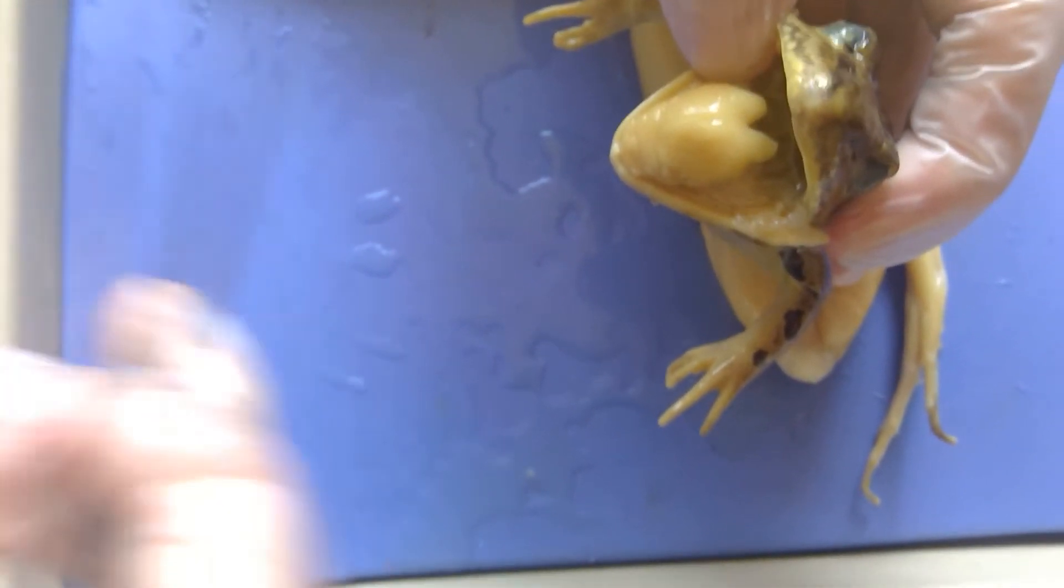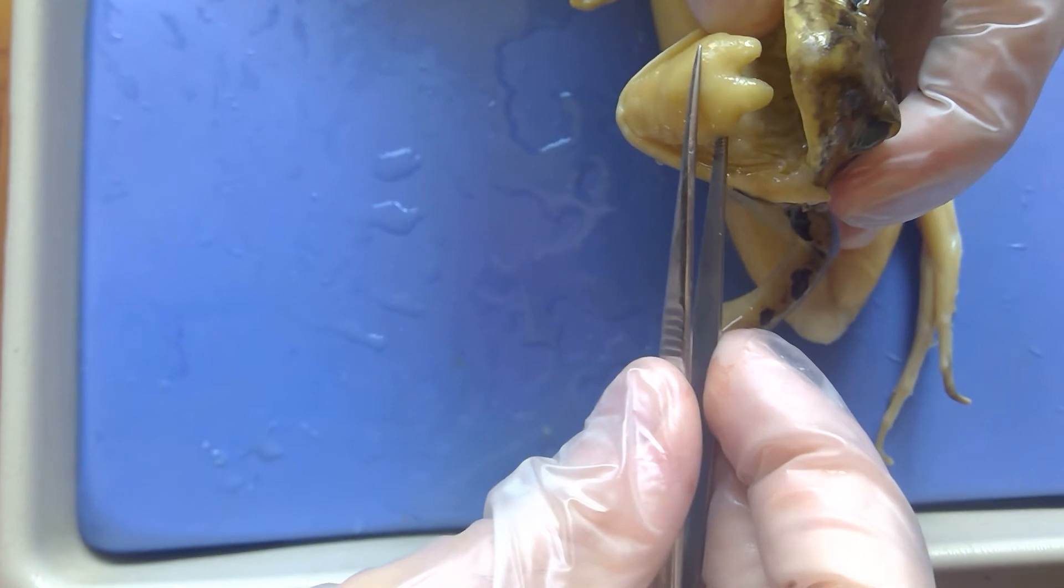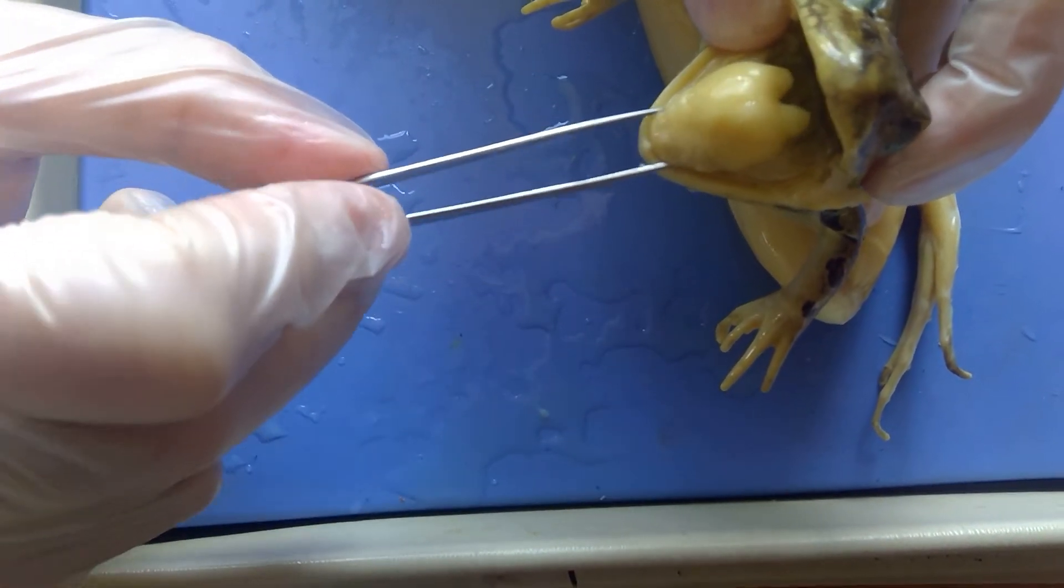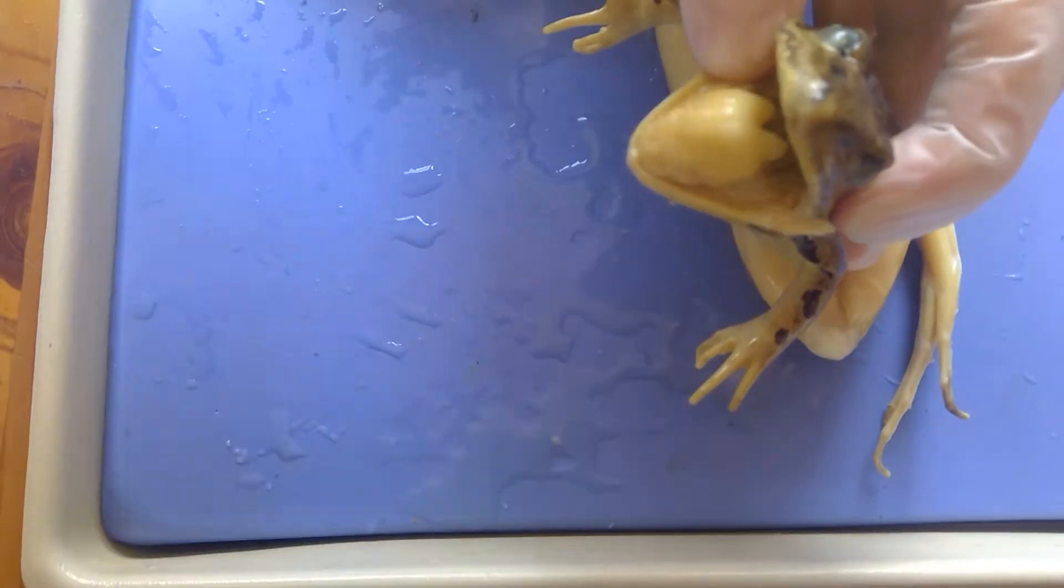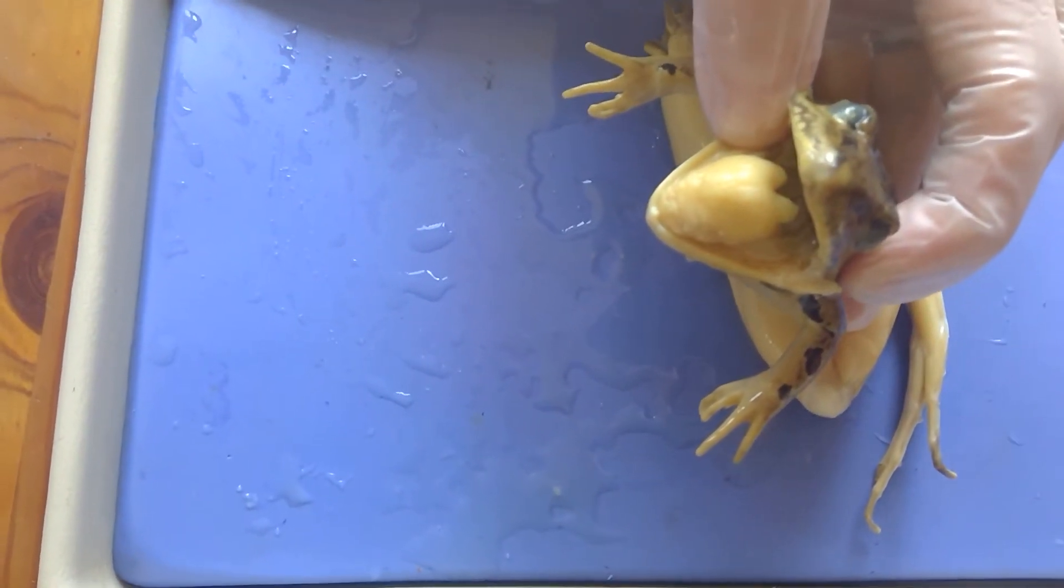And the frog's tongue, if you notice, has these little prongs at the end. The other thing that you note is that the frog's tongue is stuck at the front. So the idea that the frog lashes out its tongue like a lasso is actually incorrect.